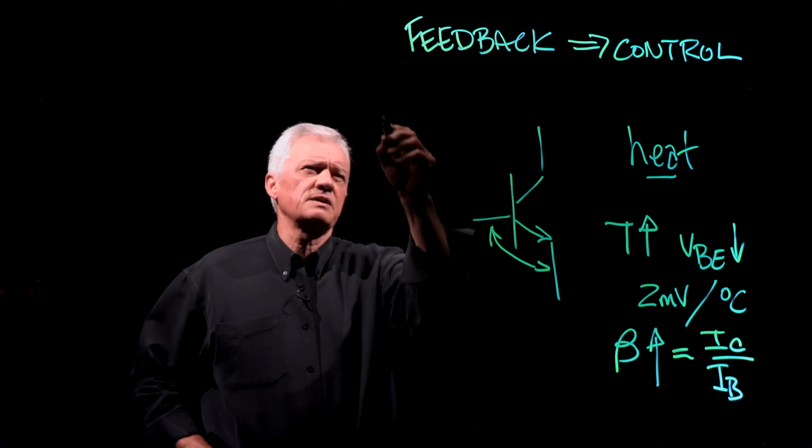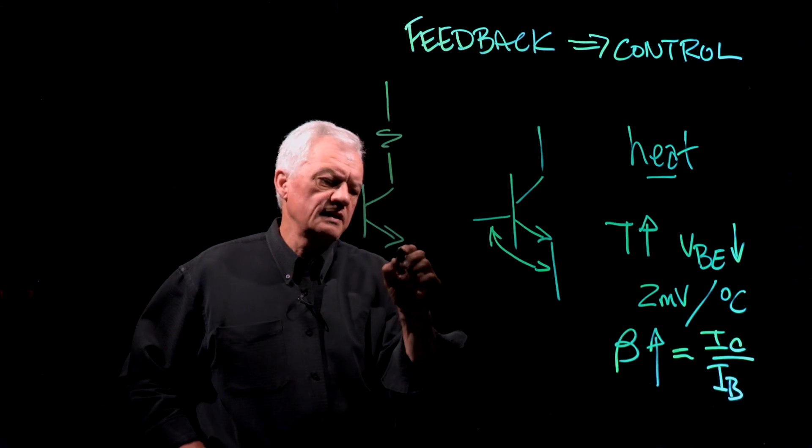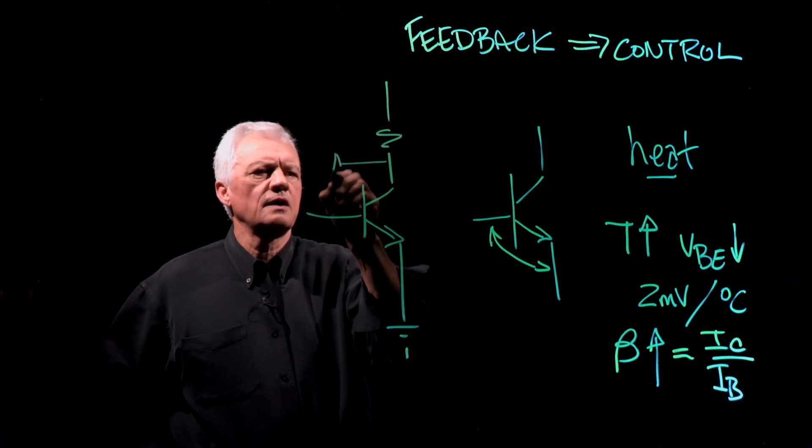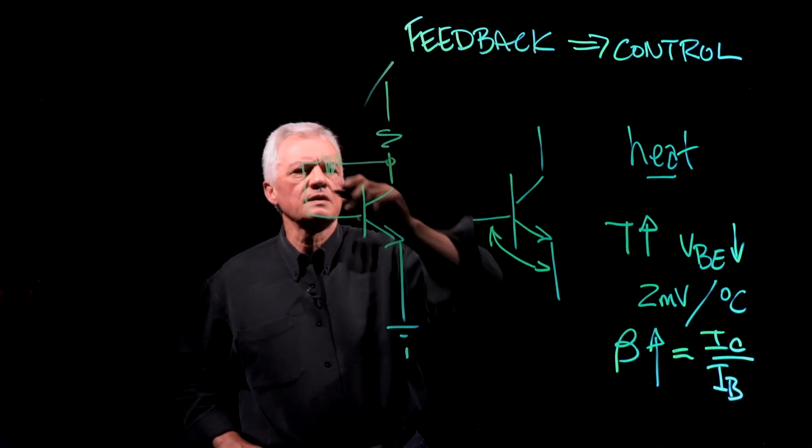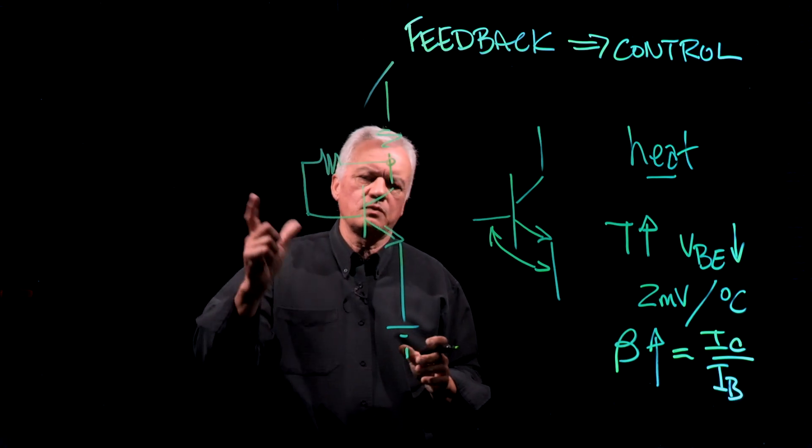So let's try and do something about this. There's a number of ways that you can control or at least feedback to offset this temperature problem. This one here is called collector feedback. It makes sense. We're taking it off the collector.